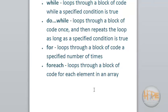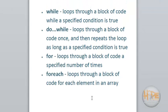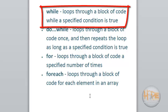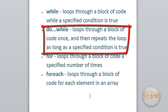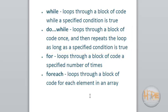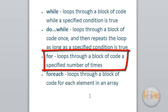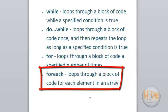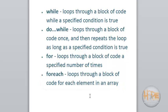In PHP we have the while loop, do-while loop, for loop, and foreach loop. The while loop loops through a block of code while a specified condition is true. The do-while loop loops through a block of code once and then repeats as long as a specified condition is true. The for loop loops through a block of code a specified number of times. The foreach loop is especially for arrays — it loops through a block of code for each element in an array.